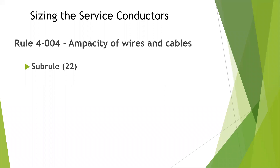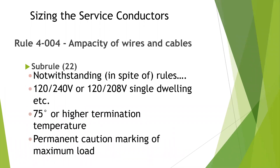When looking at the ampacity of wires and cables, what does sub-rule 22 tell us? Notwithstanding, or in spite of those other rules, that three-wire 12-2-40 volts and 120/208 service conductors for single dwellings or a feeder supplying single dwelling units, row housing, apartment buildings or similar buildings, and terminating on equipment having a conductor temperature termination of not less than 75 degrees Celsius, shall be permitted to be sized in accordance with Table 39.